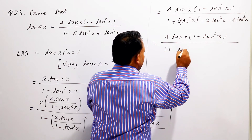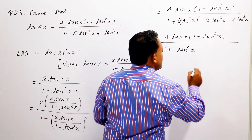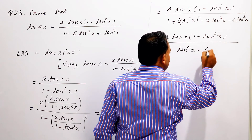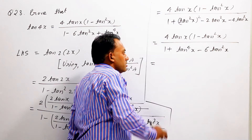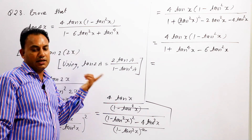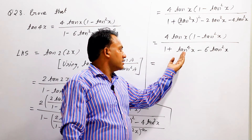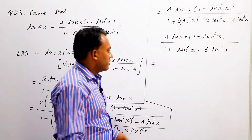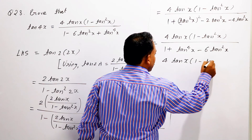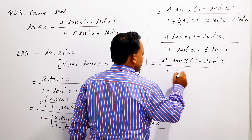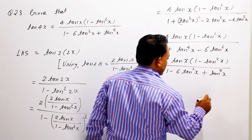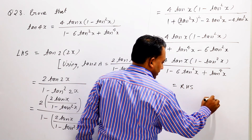Is equal to 4 tan x (1 minus tan square x) upon 1 plus tan to the power 4 x — बच्चों, 2 tan square x और 4 tan square x मिलकर हो जाएगा 6 tan square x denominator में। जो हमें proof करना था आप देख पारें। एक बार और लिख लेते हैं: 4 tan x (1 minus tan square x) upon 1 minus 6 tan square x plus tan to the power 4 x, is equal to RHS. Hence proved.